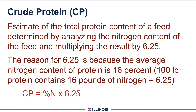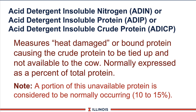Crude protein stands for the nitrogen in the feedstuff multiplied by 6.25 — a very common analysis. You're going to see related terms: acid-detergent-soluble nitrogen, acid-detergent-soluble protein, and acid-detergent-soluble crude protein. These are all adjustments used in models — looking at things such as heat damage that's occurring, and in some cases also correcting for the amount of soil.